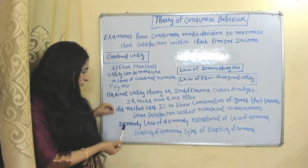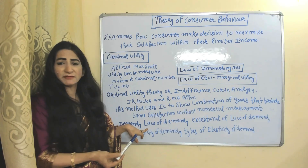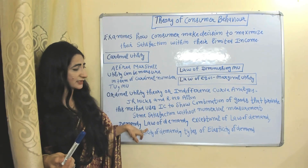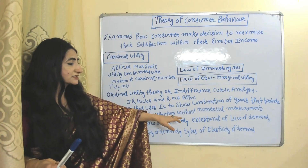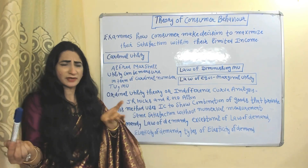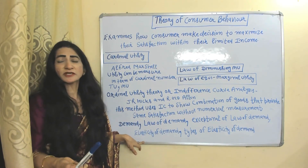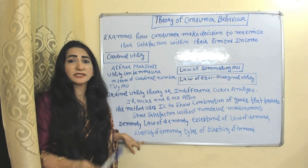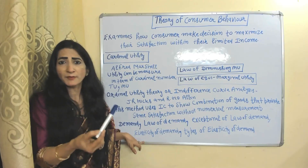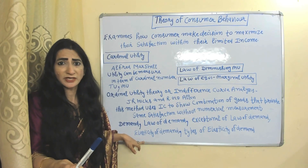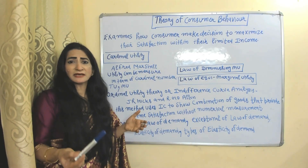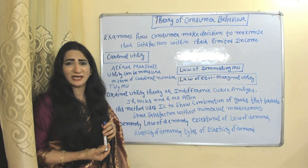We also study demand — the law of demand shows the inverse relationship between price and demand. Exceptions include Giffen goods and the Veblen effect. Elasticity of demand shows how much demand changes due to changes in income, price, and price of related goods. Types of elasticity of demand include income elasticity, price elasticity, and cross elasticity of demand.